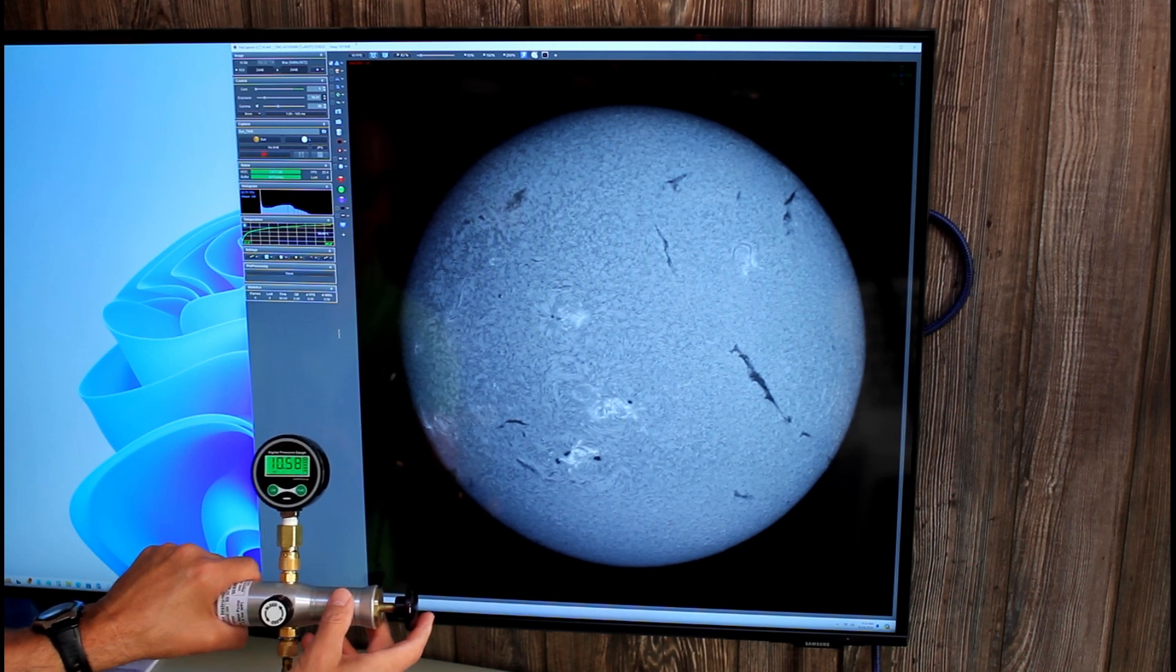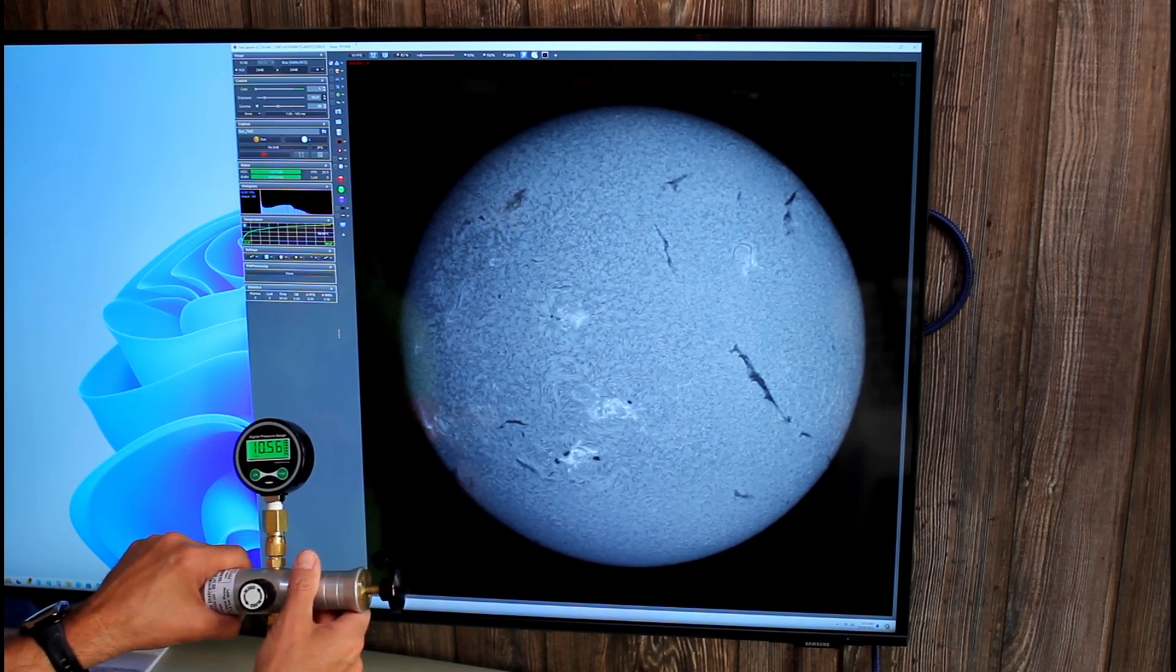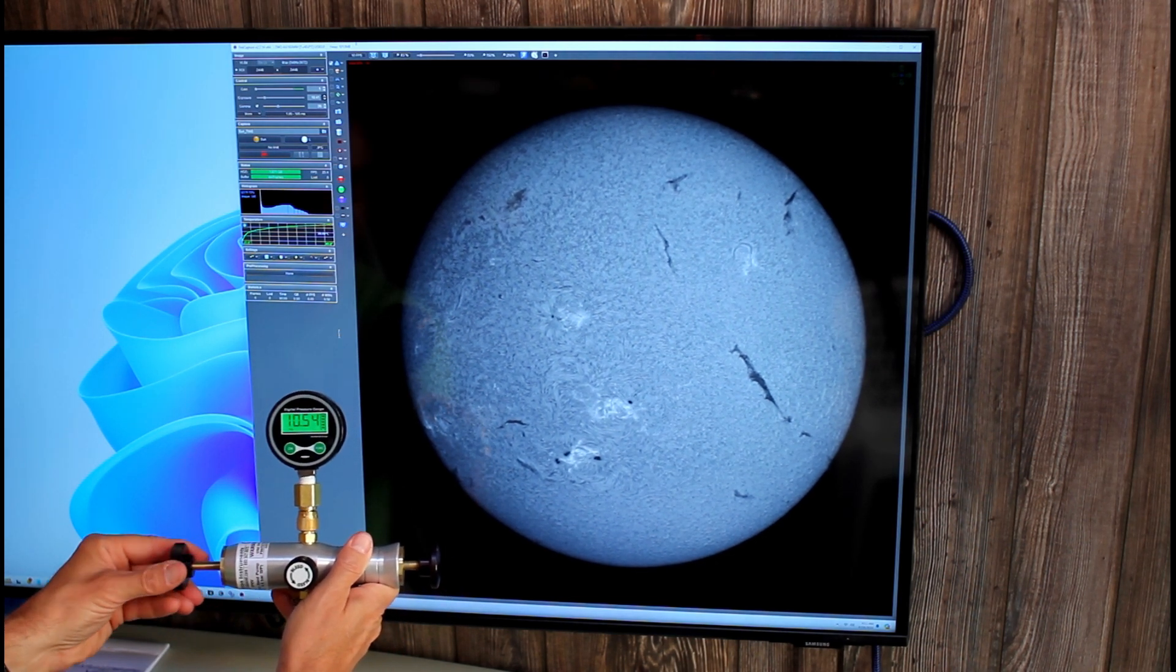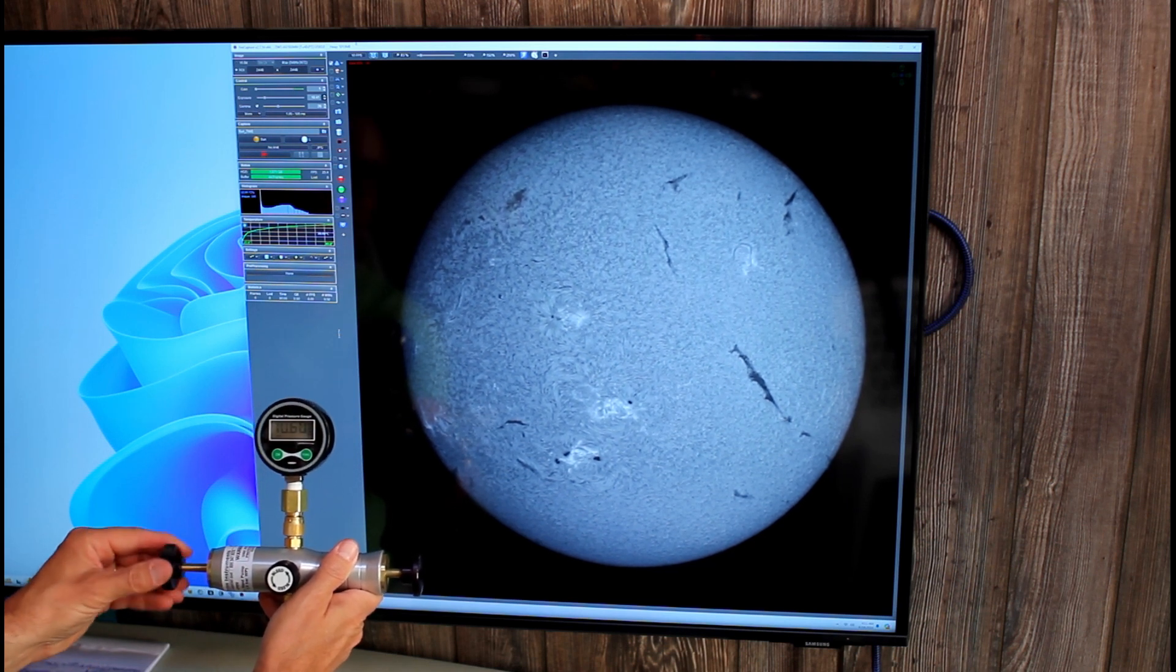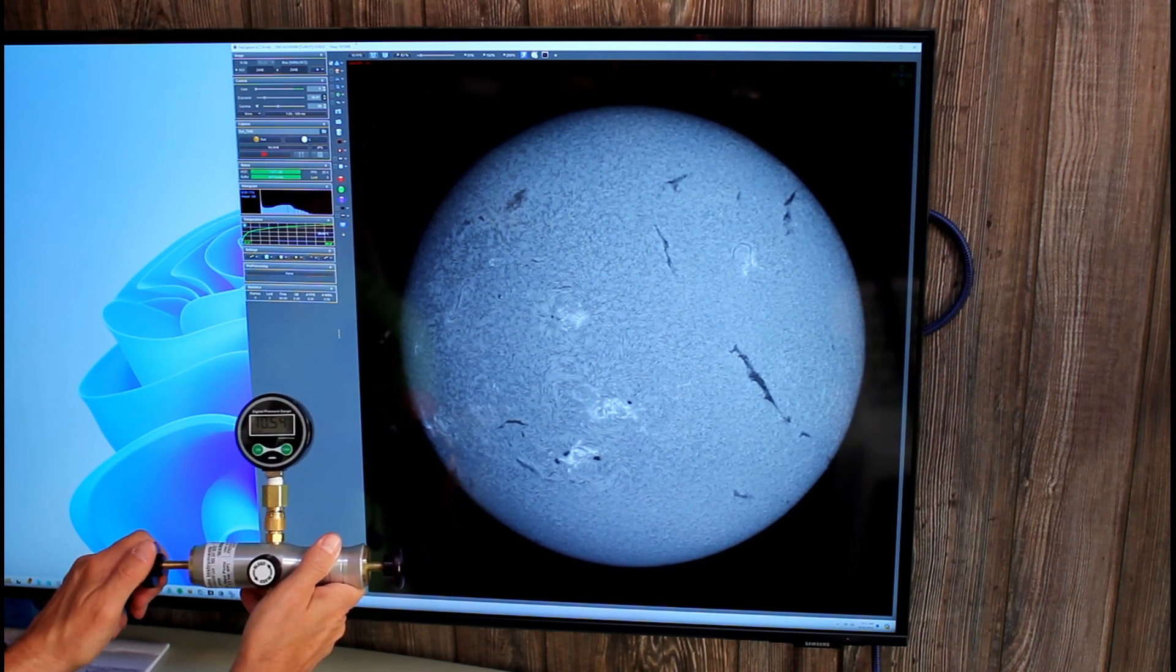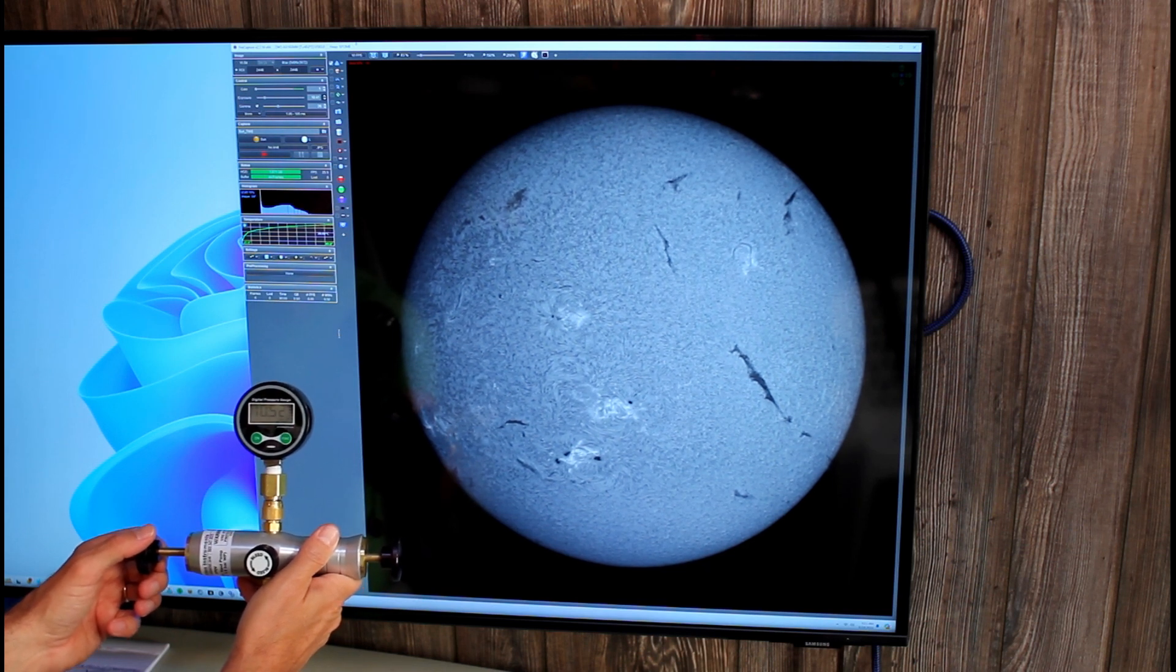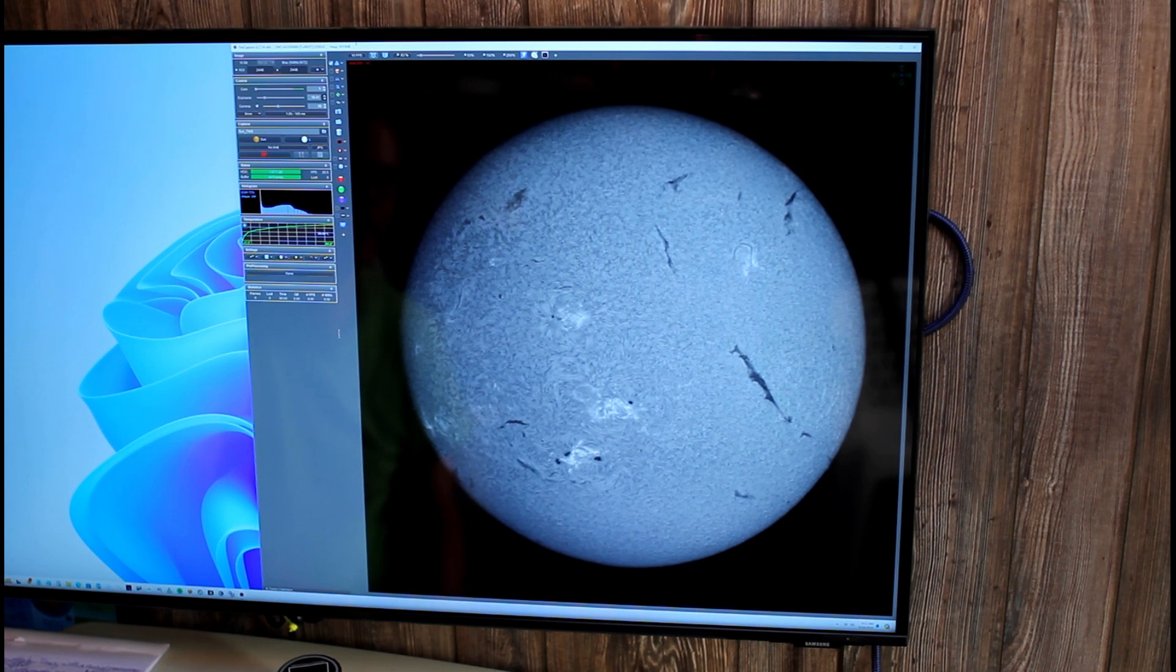So there's 10.6 psi and this knob on the left is a screw that you can use to fine tune the pressure. If I turn it clockwise it gradually increases the pressure. Counter clockwise it will gradually decrease the pressure. So this gives you control to a few hundredths of a psi. Now you can see lots of detail on the surface of the sun here showing that you're on band.